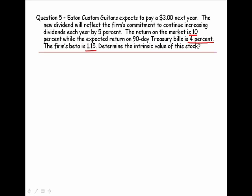We begin the same way. Let's write down our formula: V equals D1 over R minus G. They expect to pay $3 next year, so they've given us D1 in this problem. What we don't have is the required rate of return. So we will use the capital asset pricing model to determine the required rate of return on this stock.